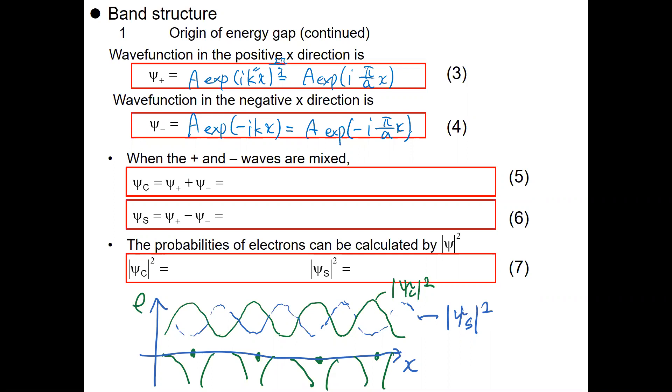And then, let's think about that. The wave is now going and bouncing and interfering with each other. Let's think about the two types of wave function, which is the sum of psi plus and psi minus, and the subtraction of psi plus and psi minus. Just simply calculate this equation, and you can obtain psi c equals 2A cosine pi x over a, and psi s equals 2A sine pi x over a.